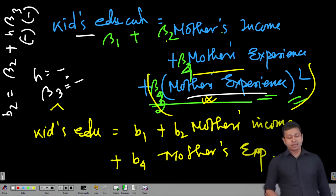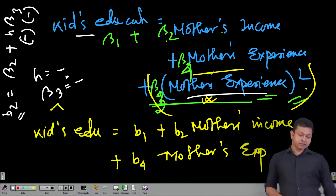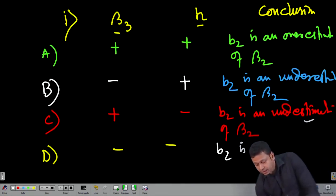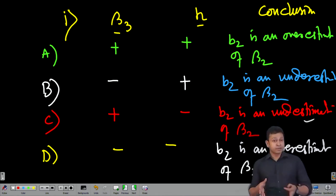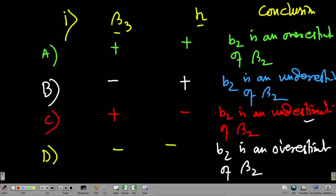In Case 4, H is negative and β₃ is negative, so B̂₂ = β₂ + H×β₃. A double negative makes the component positive, so B̂₂ is an overestimation of β₂ — just like Case 1. So these are the four cases showing the relationship between H, β₃, and the direction of bias. In the next lecture, we will do a hands-on exercise to explain this and also discuss the relationship between these beta terms, H, and R-squared. Thank you.